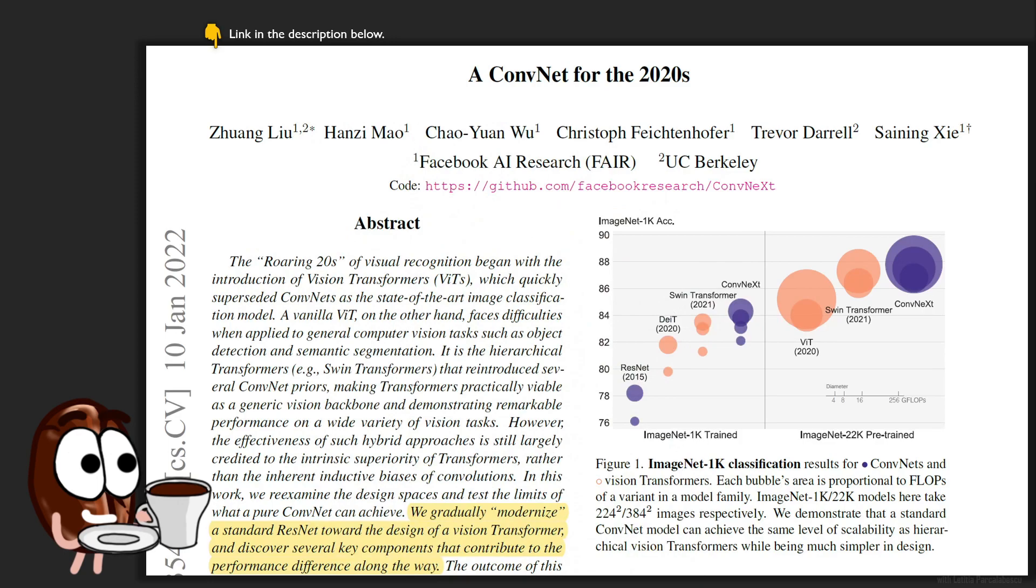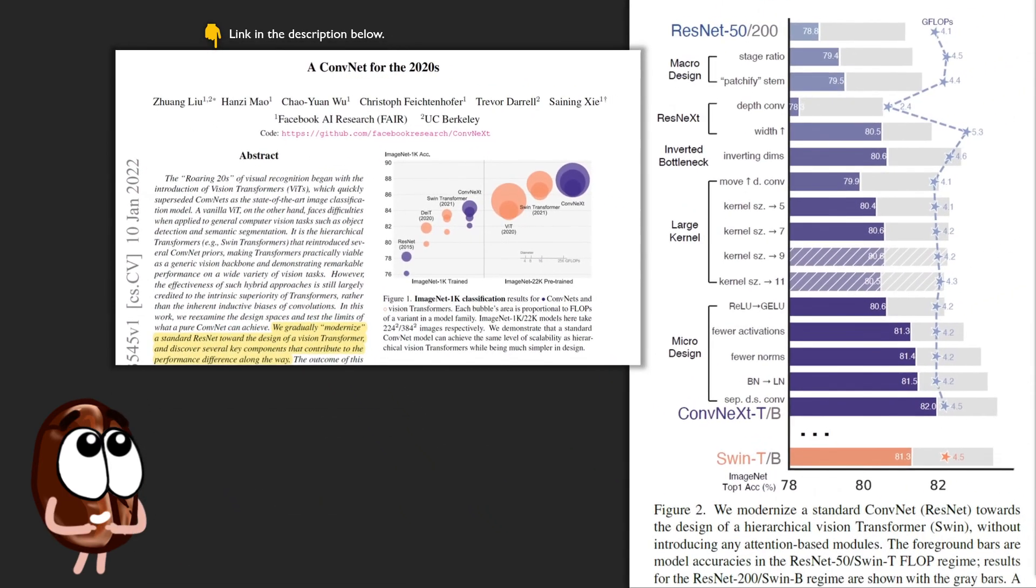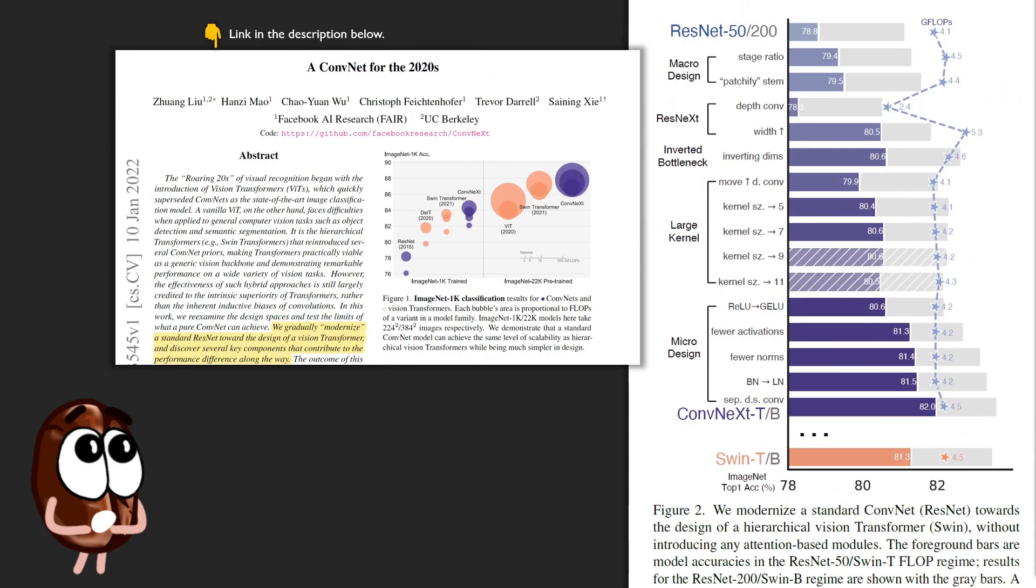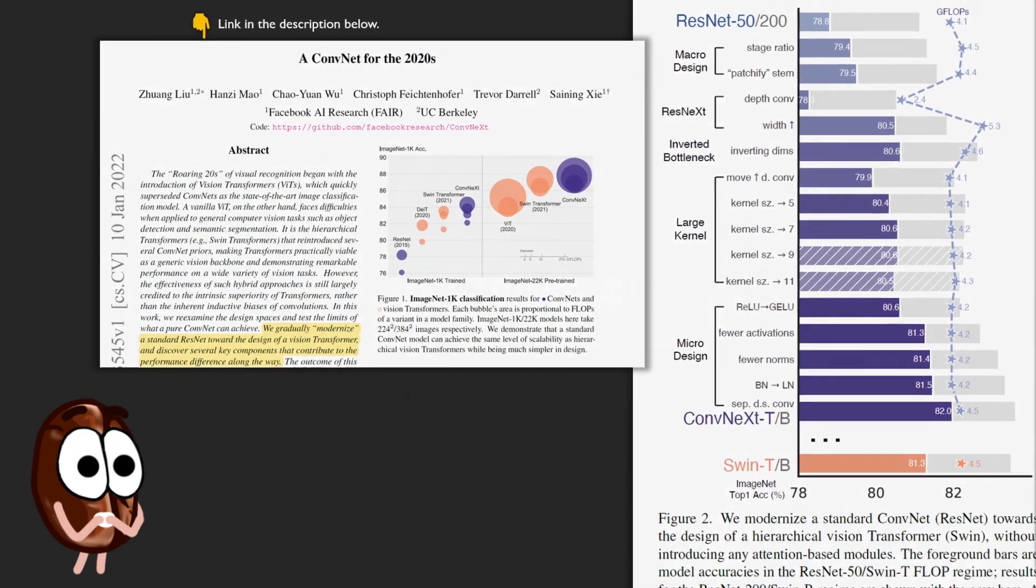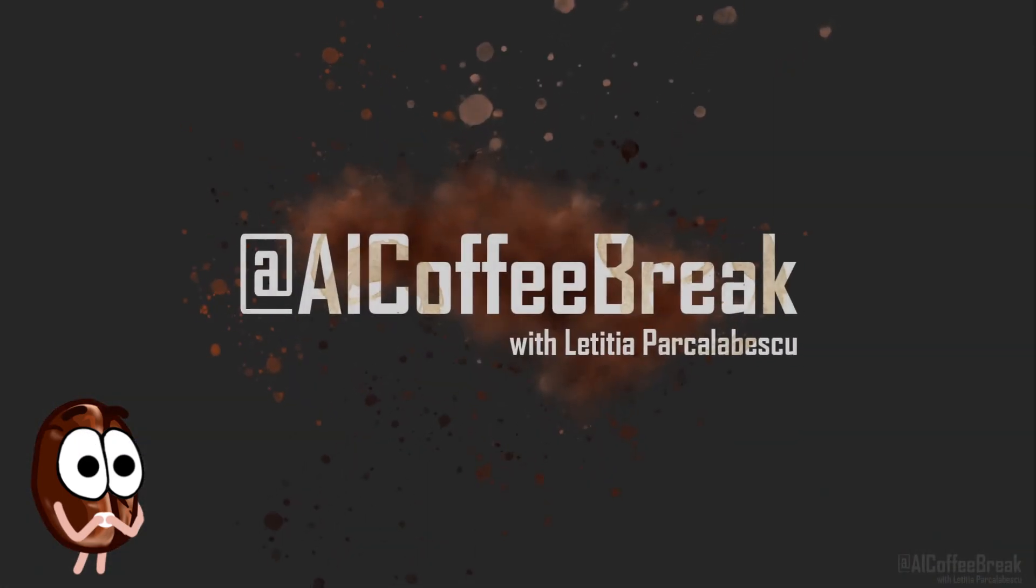How many things do we have to add to a ConvNet to make it as powerful as a Transformer? Well, if you're interested in this question, you're in luck. What if me and Ms. Coffee Bean told you that there is a paper which takes a standard ConvNet, a ResNet, and morphs it such that the design approaches a Vision Transformer? And spoiler, it surpasses the Transformer in terms of performance.